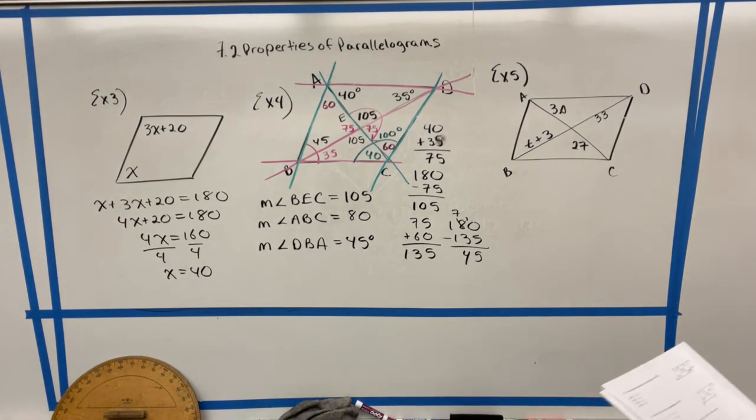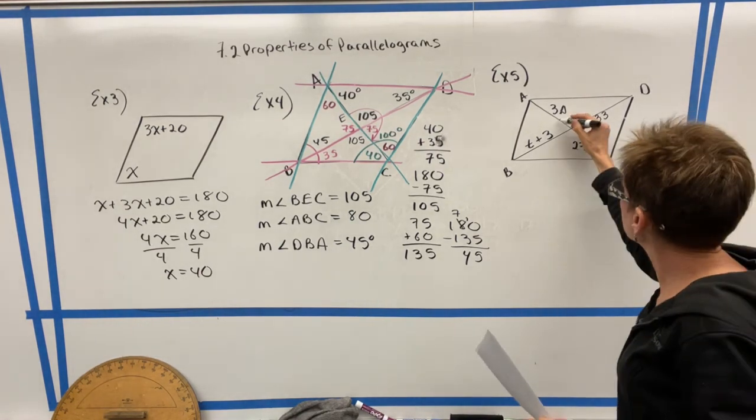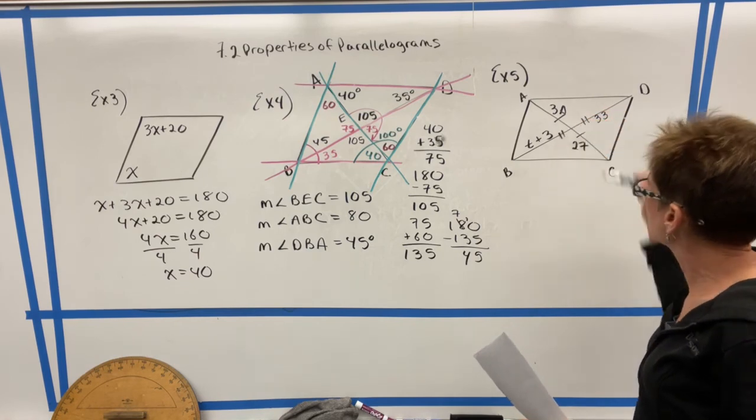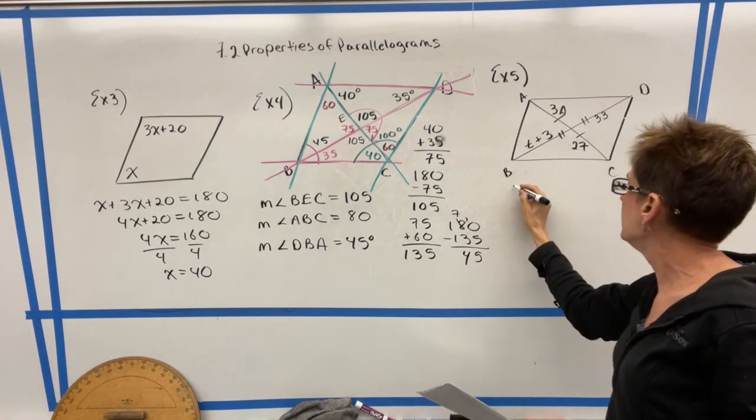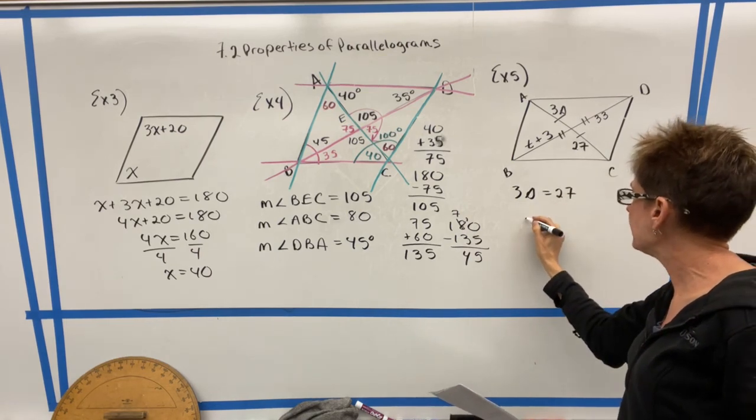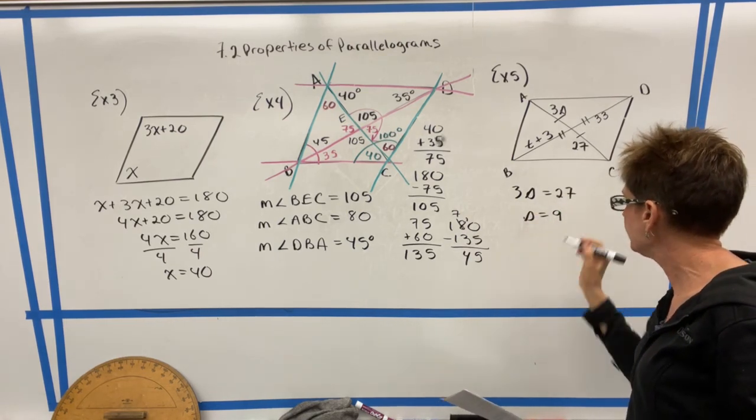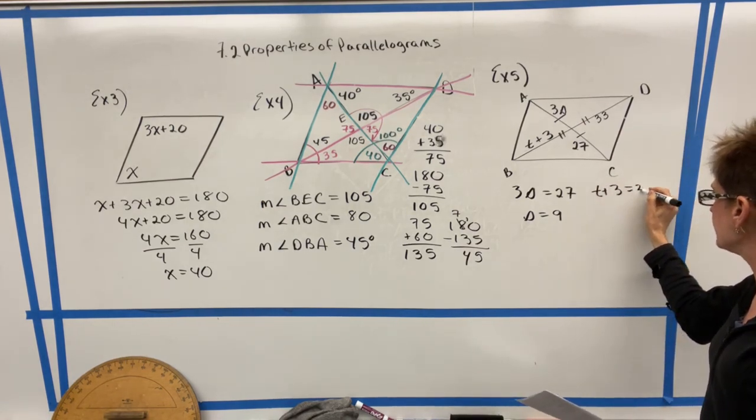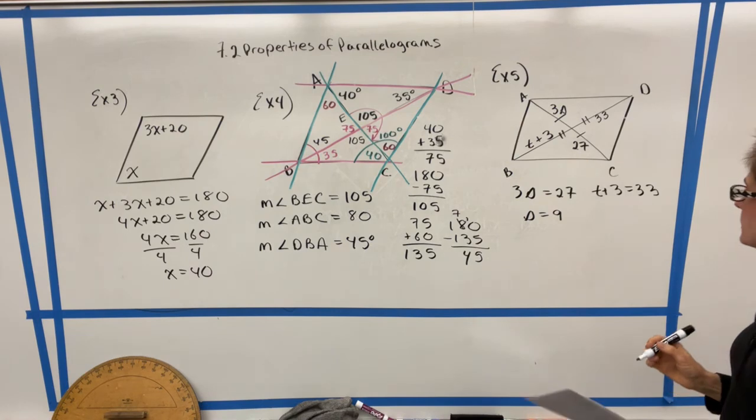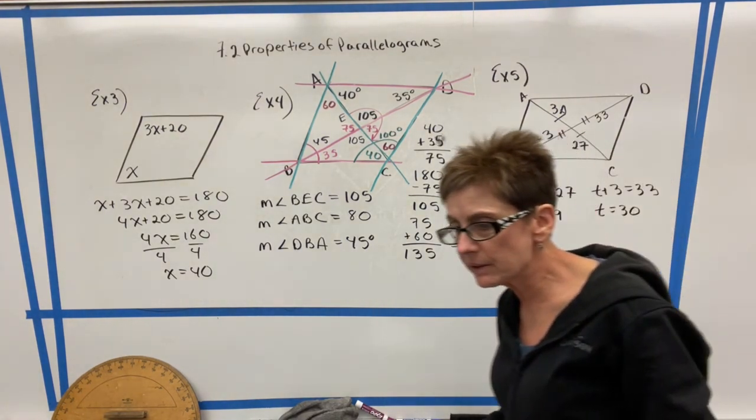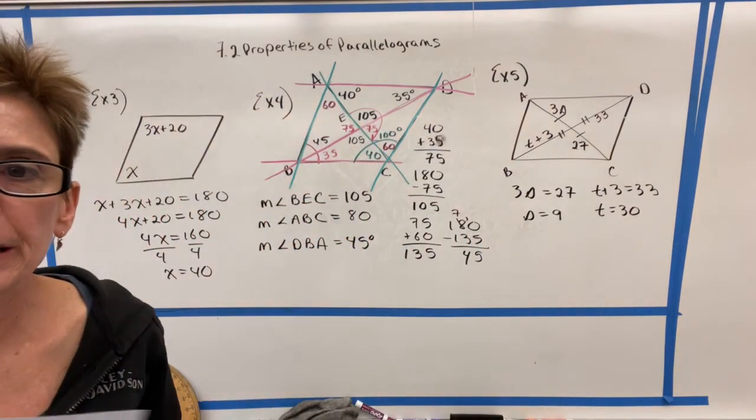If you look at your notes, you're going to notice that the diagonals bisect each other. So this piece and this piece need to be the same length. And these two pieces need to be the same length. So I know that 3S is equal to 27 or dividing by 3S is 9. And I also know that T plus 3 is equal to 33. So when I subtract 3, I get that T is 30.